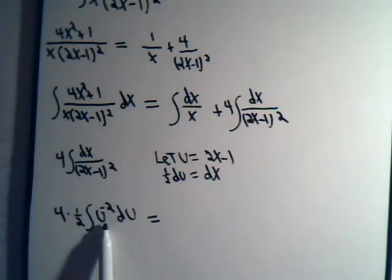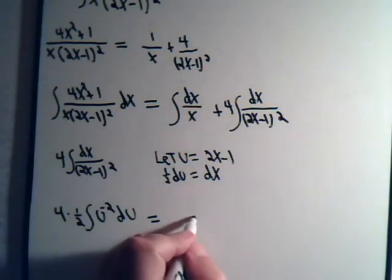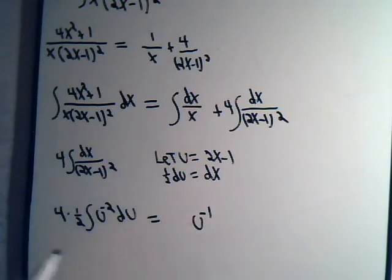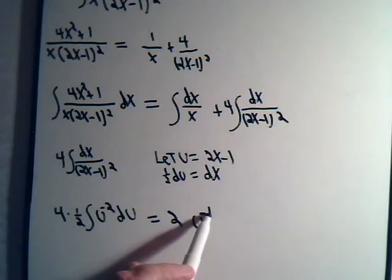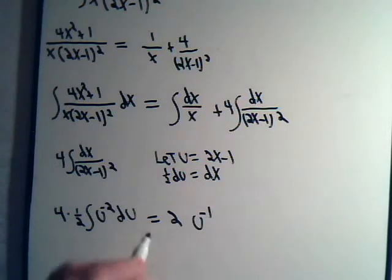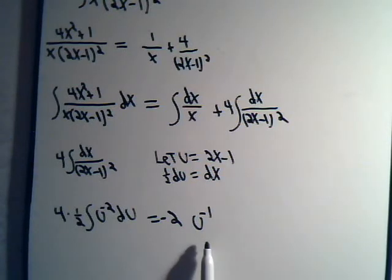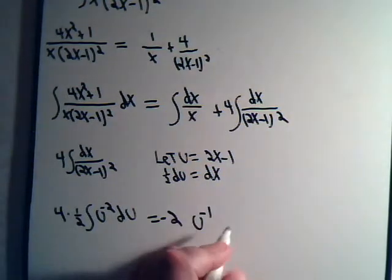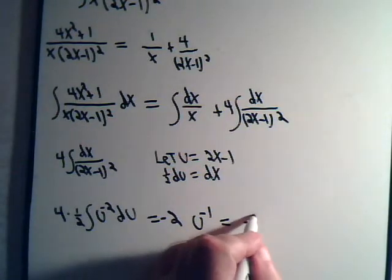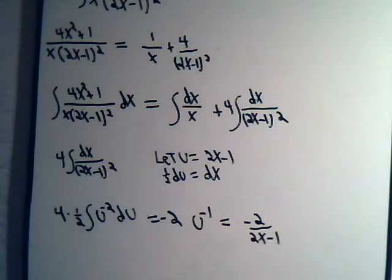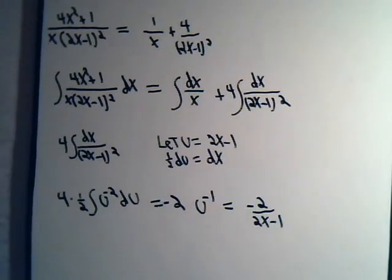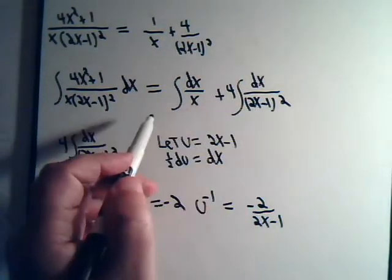So let's see. This is u to the minus 2. We'll integrate that. It's going to be u to the minus 1. Here we have 2. And divided by minus 1. We divide by the new exponent. Or that makes that minus 2. And u is this. So we have minus 2 over 2x minus 1.